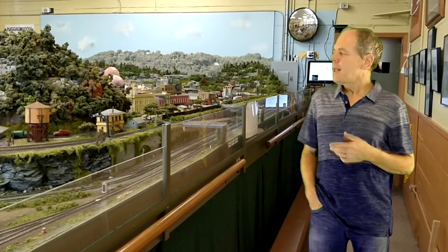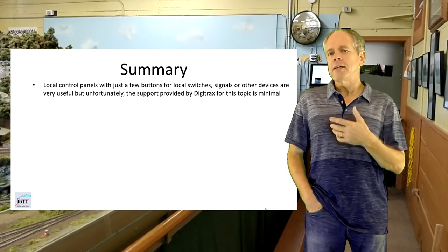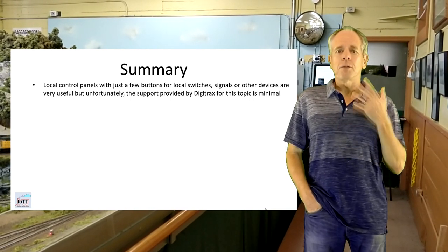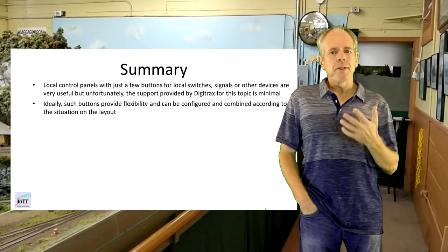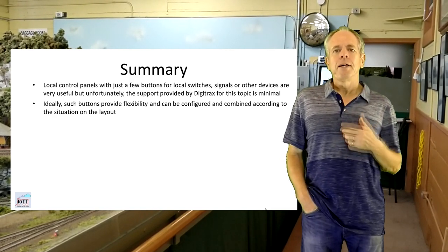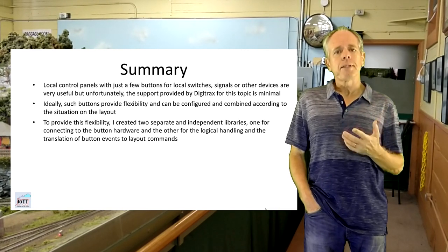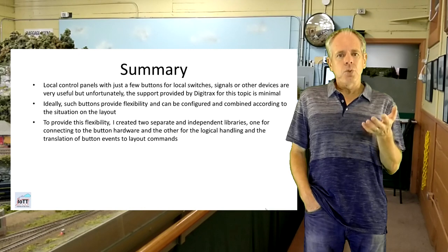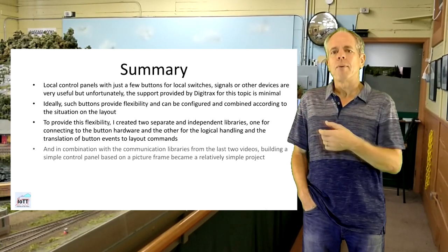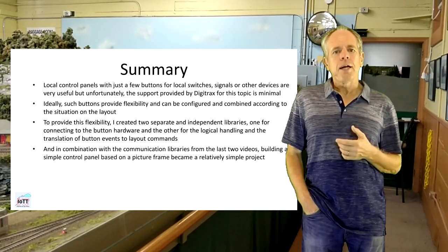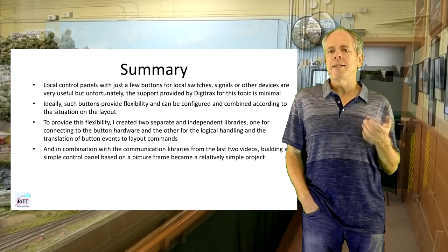Let's summarize. Local control panels with just a few buttons for local switches, signals, or other devices are very useful, but unfortunately the support provided by Digitrax for this topic is minimal. Ideally, such buttons provide flexibility and can be configured and combined according to the situation on the layout. To provide this flexibility I created two separate and independent libraries — one for connecting to the button hardware and the other for the logical handling and translation of button events to layout commands. And in combination with the communication libraries from the last two videos, building a simple control panel based on a picture frame became a relatively simple project.